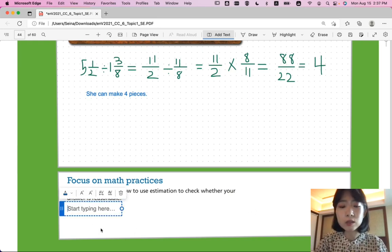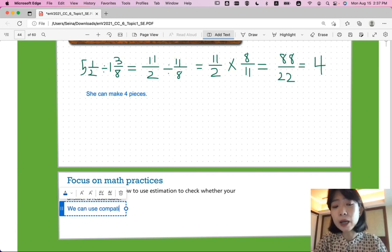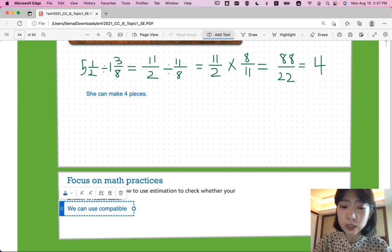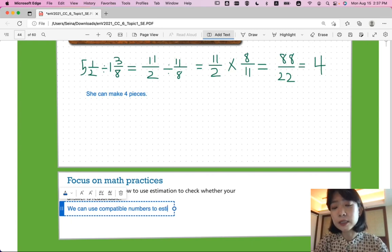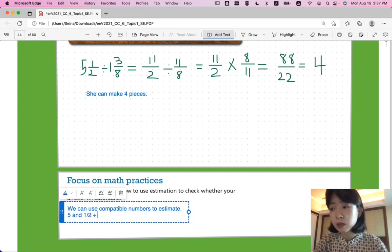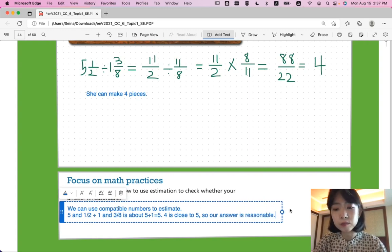So, you can use compatible numbers, numbers that are easy to compute mentally. Compatible numbers to estimate. So, 5 and 1 half divided by 1 and 3 eighth is about 5 divided by 1, which is 5. 4 is close to 5. So, our answer is reasonable.